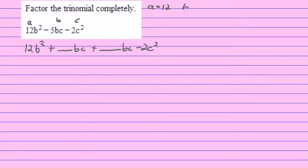b is negative 5, and c is negative 2. I multiply a times c. This is just the method: a times c is going to be 12 times negative 2, which is negative 24. I now am going to factor negative 24.